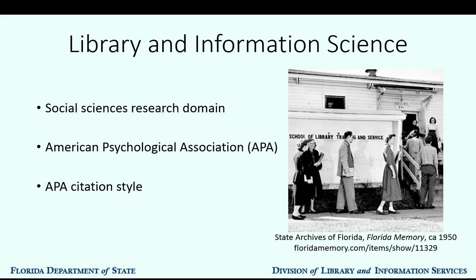Library and Information Studies, or LIS, is categorized as a social science. Other social sciences include psychology, sociology, political science, and economics. All of the social sciences, including library science, look to the American Psychological Association, or APA, for guidance on how to properly report on original research and cite existing research. The APA publishes a manual of style periodically, as new sources such as e-resources and blogs begin to be cited in mainstream research literature.